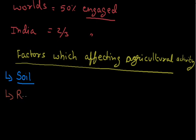The second factor is relief — relief means topography, how the land is. If the land is mountainous, meaning a slopey land, then tree-like crops are good because they need continuously fresh water, so they need a slopey land. Crops like rice need a totally flat land. So relief also helps in the production of crops and is also one of the important factors.